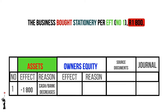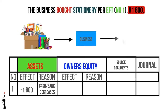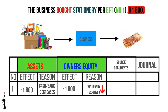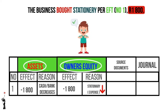In this example, the business assets decrease because your cash or bank decreases by 1,800 rand — the business paid money for the stationery. The owner's equity decreases with 1,800 rand because stationery is an expense, and expenses decrease your owner's equity. Always do the equation test: are the assets equal to the owner's equity? Yes — assets are negative 1,800 rand and owner's equity is negative 1,800 rand, so the accounting equation is correct.